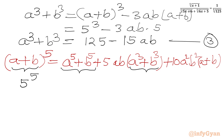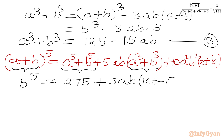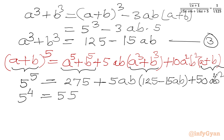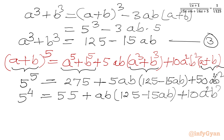Plugging in the values: 5⁵ equals 275 plus 5ab times (125 minus 15ab) plus 10a²b² times 5. Now 5⁵ is 3125, and 5⁴ is 625. After simplification, 3125 minus 5⁵... working through: 625 minus 55 gives 570 on the left side, yielding 570 equals 625ab minus 75a²b² plus 50a²b².